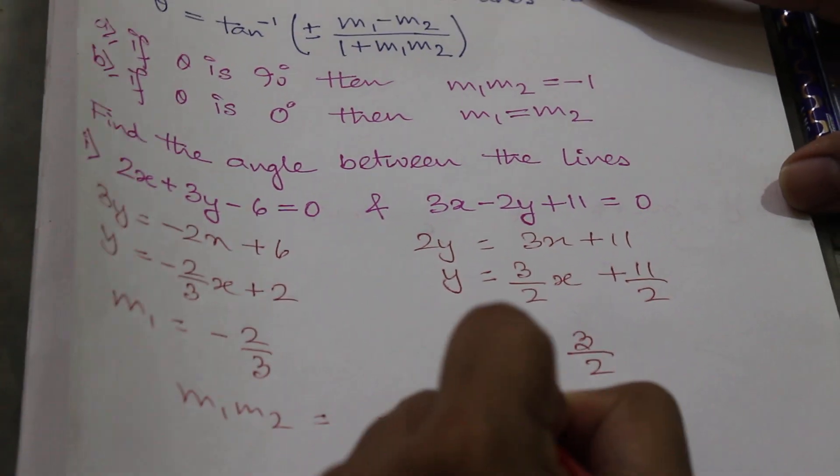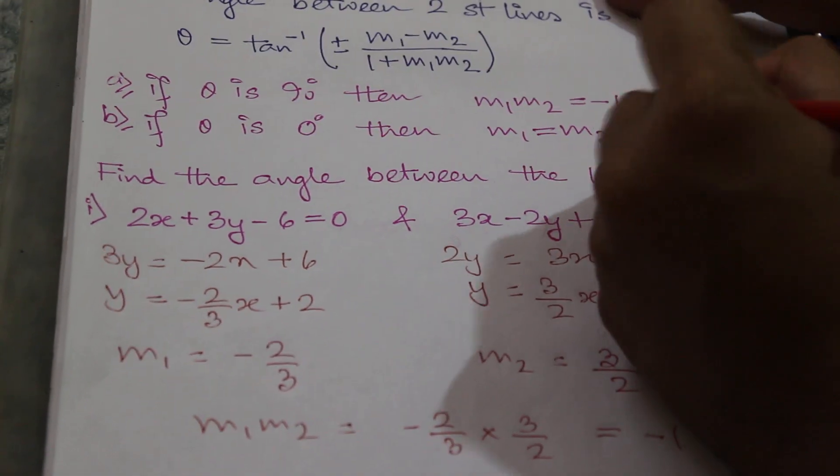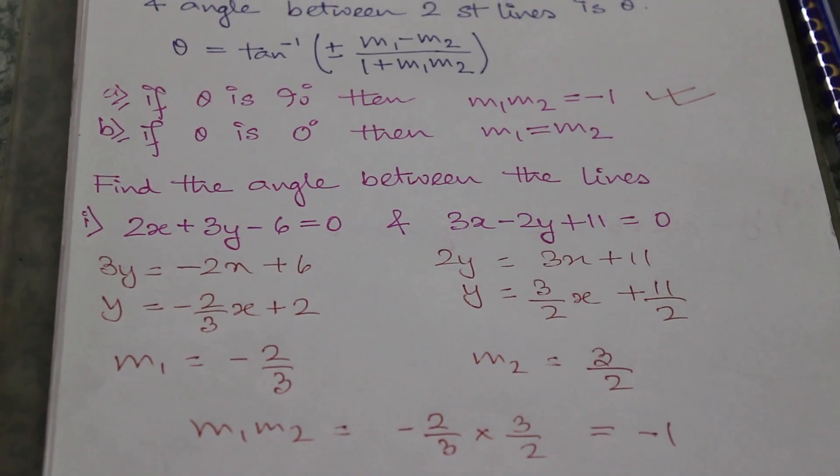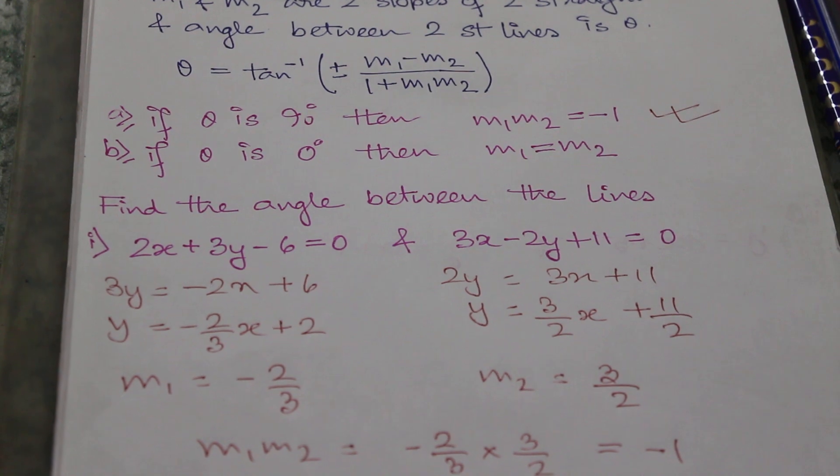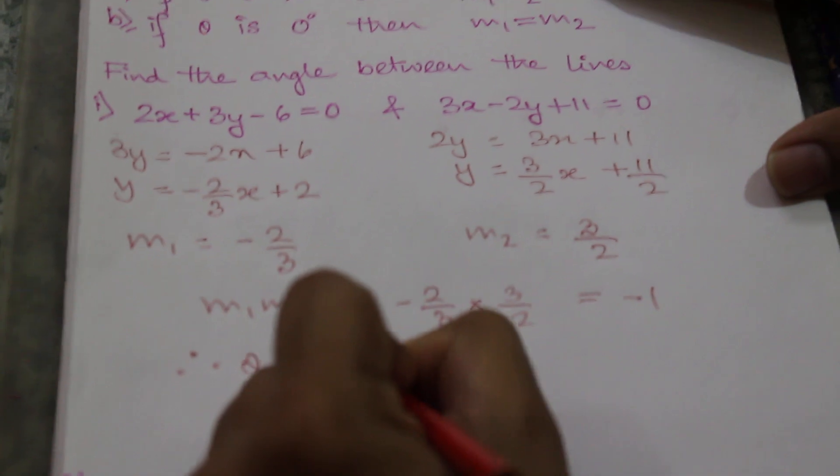So we will use this shortcut: if theta is 90 degrees, then m1 × m2 = -1. So the angle between them is 90 degrees, that means these two straight lines are perpendicular to each other.